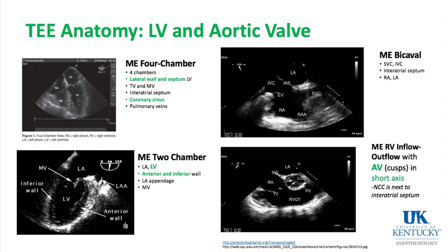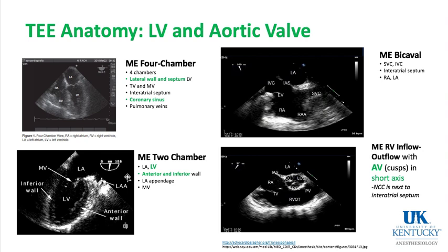The mid-esophageal bicaval view shows the SVC to the right and the IVC to the left, with the left atrium closest to the TEE probe and the interatrial septum between the left and right atria — a good view for PFO detection and for watching a guidewire or PA catheter come through. The mid-esophageal two-chamber view at 90 degrees shows the anterior wall to the right and the inferior wall to the left, with the mitral valve between the left atrium and left ventricle. The left atrial appendage, which can harbor clots, is visible in this view — useful before cardioversion.